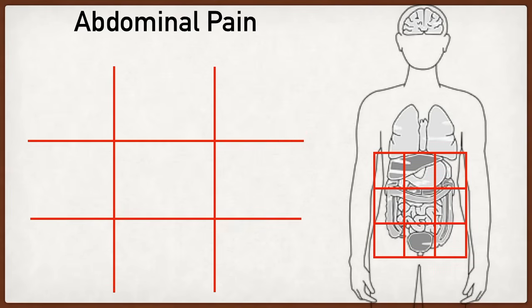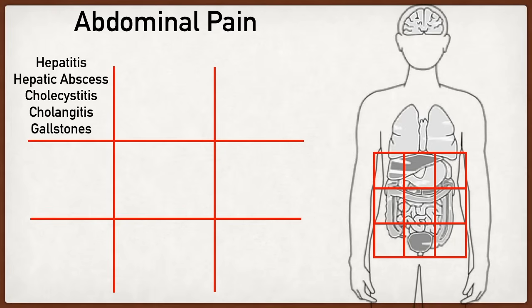Now that we have a good understanding of the anatomy of each quadrant, we can start talking about the pathology. Starting with the right upper quadrant — where the liver, gallbladder, and biliary system are primarily located — problems with any of these structures can lead to right upper quadrant pain. This might include hepatitis, hepatic abscess, cholecystitis, cholangitis, and gallstones also referred to as cholelithiasis, which can lead to biliary colic.